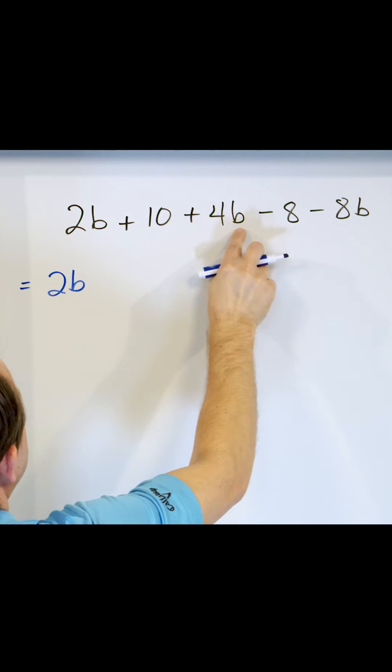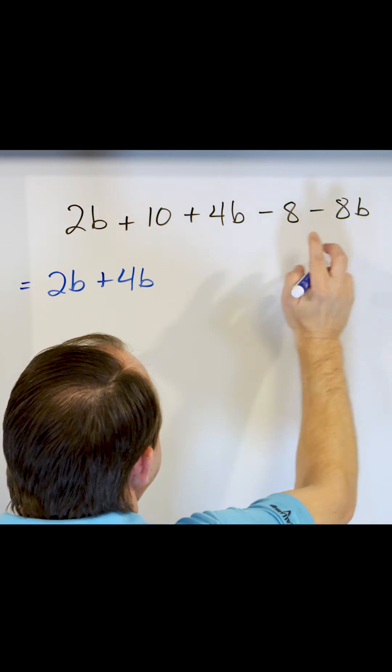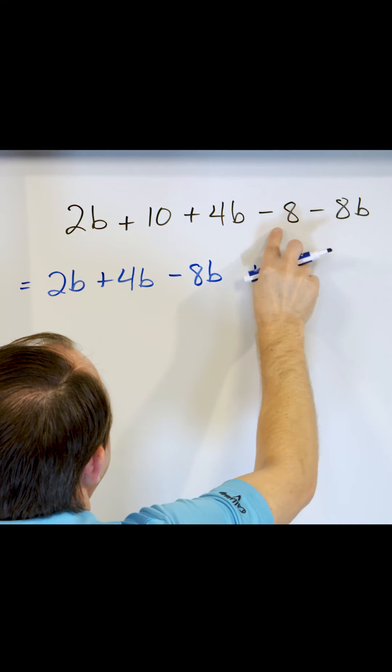So 2 times b, plus 4b, and then minus—minus goes with it—8b. And then we have the plus 10, and then we have the minus 8.